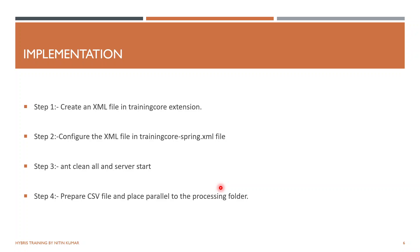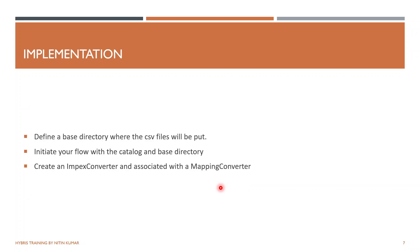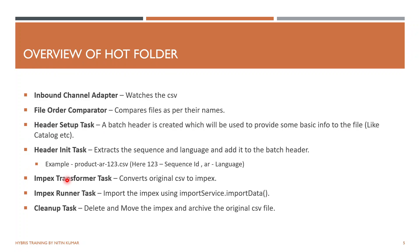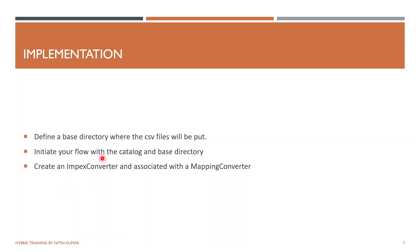For the implementation, we first mention one base directory where we will put the CSV. All this configuration will be in the Spring file we create. We give a base directory for the CSV input, initiate our flow with the catalog and base directory, give the base directory to the init method, perform the header setup task, and then create one ImpEx converter and associate it with the converter mapping.